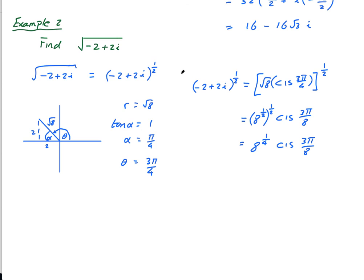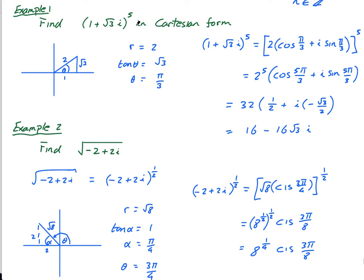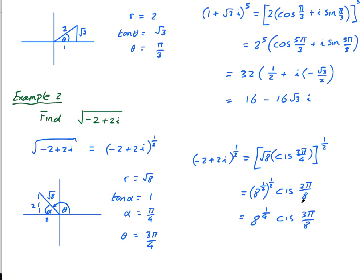This is then 8 to the power of a quarter times cis 3 pi over 8. Now look, he didn't actually say, this time he said write it in, find this in Cartesian form, so I had to put it in Cartesian form. This time he just said find this, so there, that's it, that's the square root of this. I've written it in cis form, fair enough. So that's De Moivre's theorem.